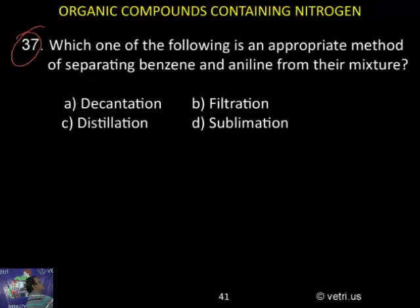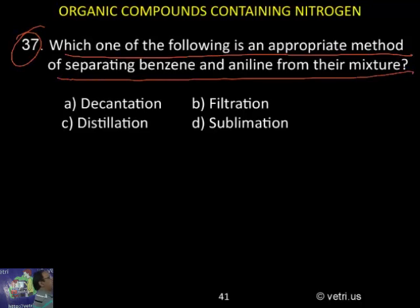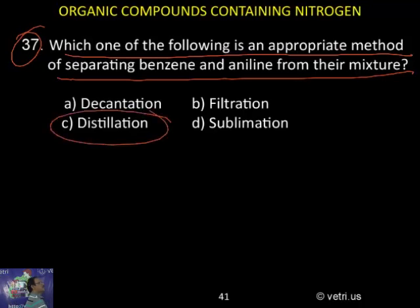Question 37: Which one of the following is the appropriate method of separating benzene and aniline from their mixture? Decantation, filtration, distillation, or stabilization? The correct answer is C — distillation. Very good.